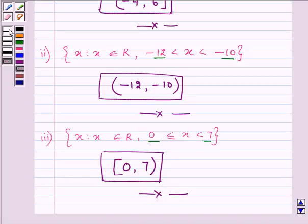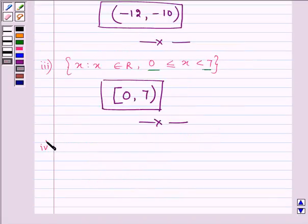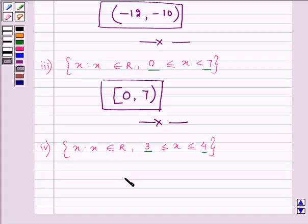Proceeding on to the last and final part. It is X belongs to R where X is greater than equal to 3 but less than equal to 4. Now here the interval is from 3 to 4 where both 3 and 4 are included. That means it's a closed interval from both the sides and hence the answer will be 3 comma 4 and it's closed from both the sides. So this becomes the answer of the last and final part.